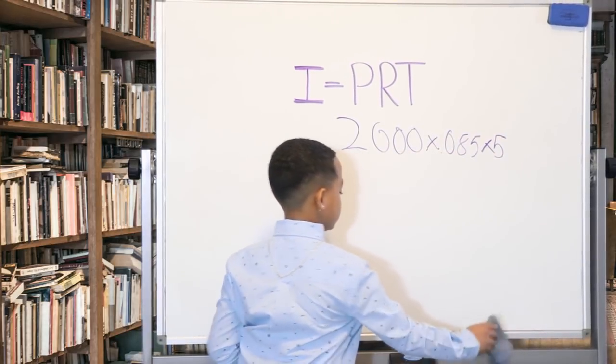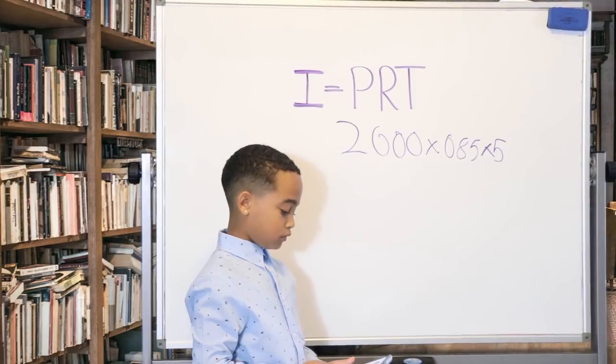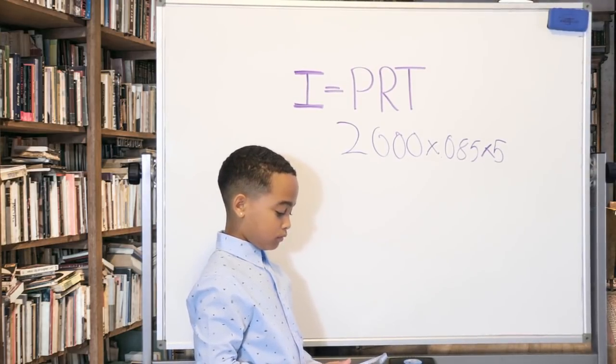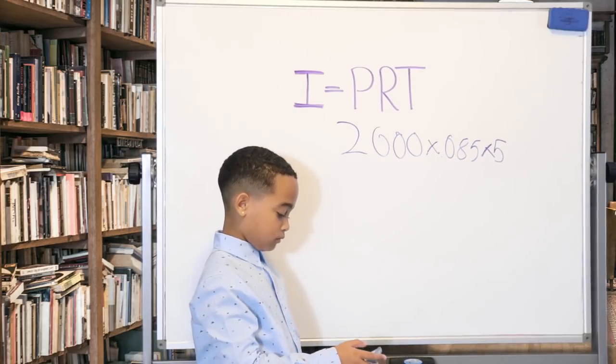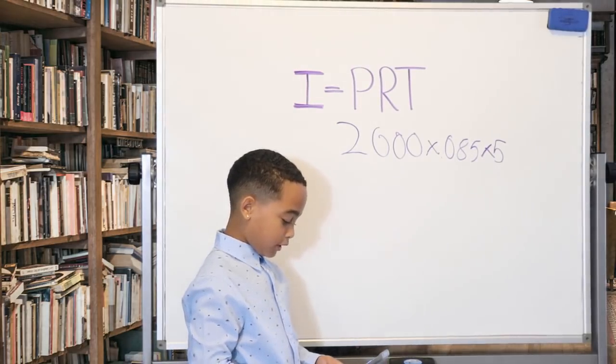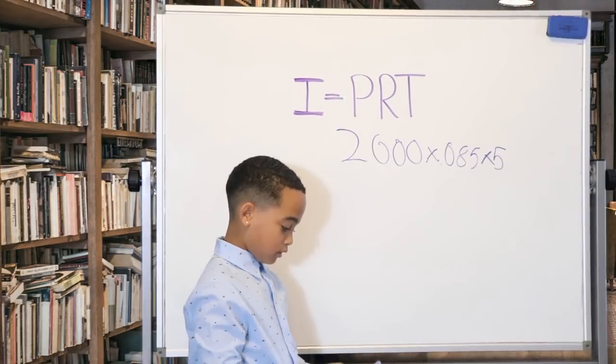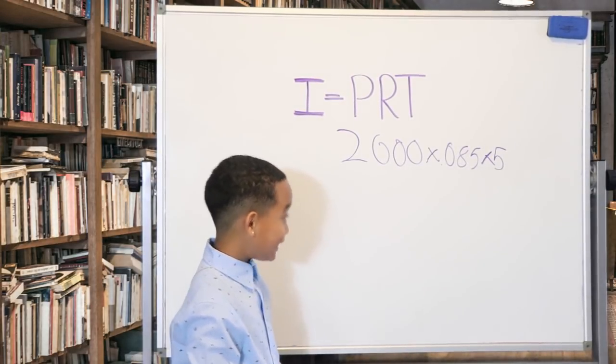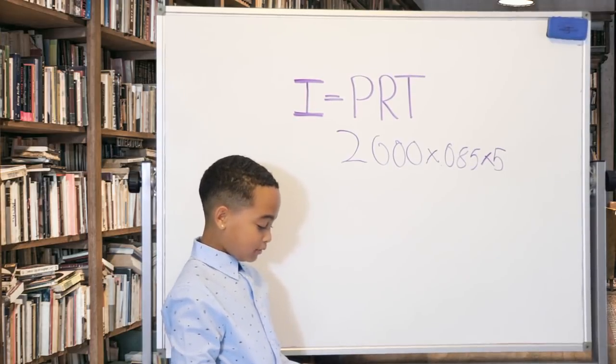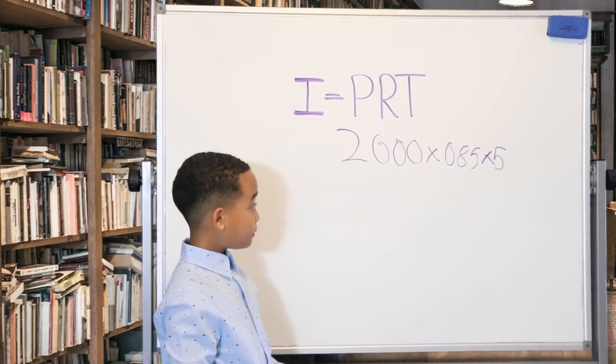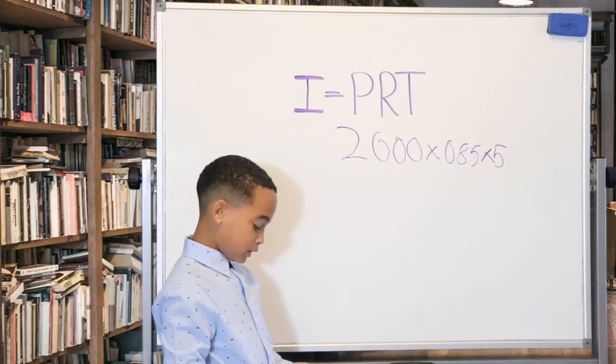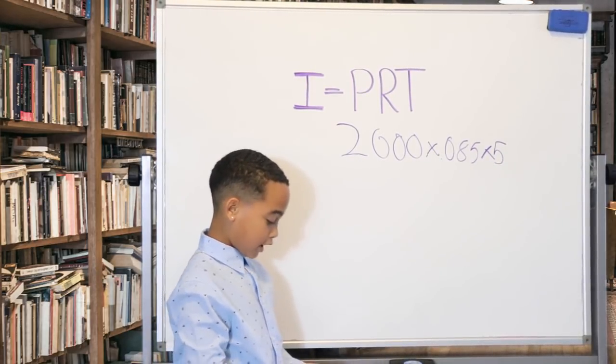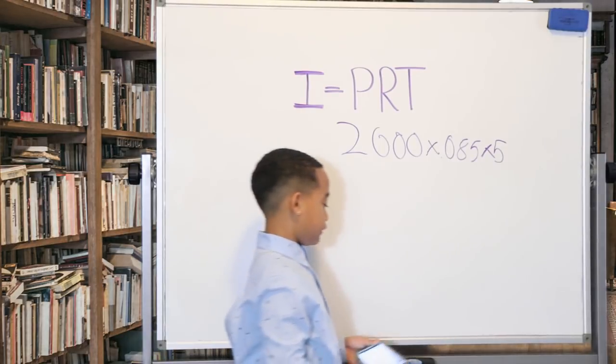We might need a calculator. So I found a calculator. My sister lost mine. Okay, so 2,000 times 0.085 times 5 equals 850.